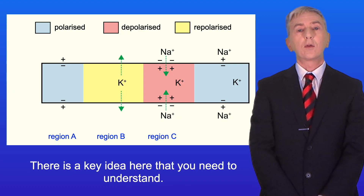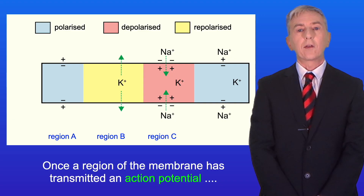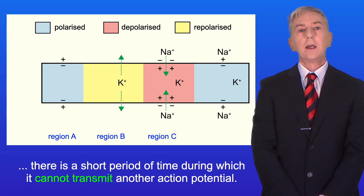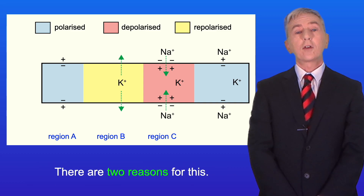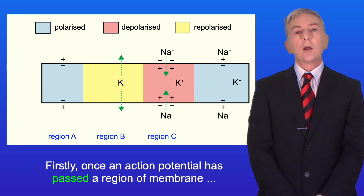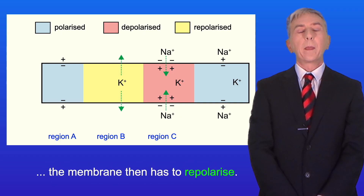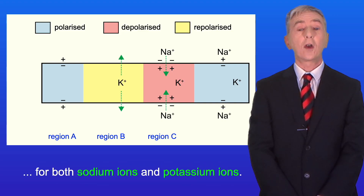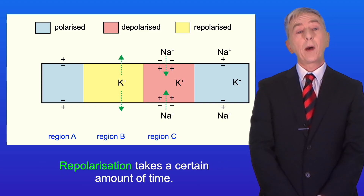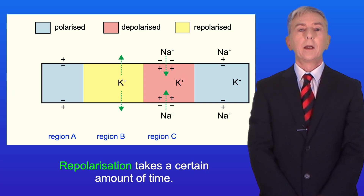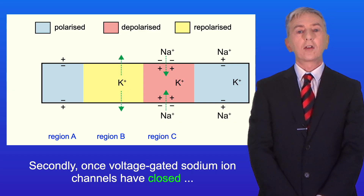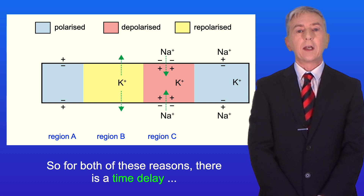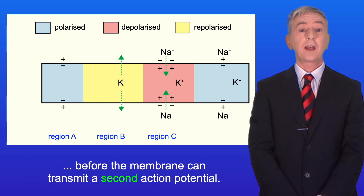There's a key idea here that you need to understand. Once a region of the membrane has transmitted an action potential, there's a short period of time during which it cannot transmit another action potential — scientists call this the refractory period. There are two reasons for this. Firstly, once an action potential has passed a region of membrane, the membrane then has to repolarize — in other words, it has to re-establish the electrochemical gradients for both sodium ions and potassium ions, and repolarization takes a certain amount of time. Secondly, once voltage-gated sodium ion channels have closed, they cannot open again for a short period of time. So for both of these reasons, there's a time delay before the membrane can transmit a second action potential.